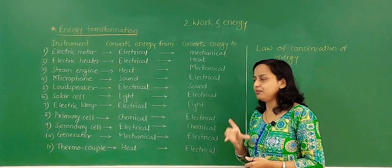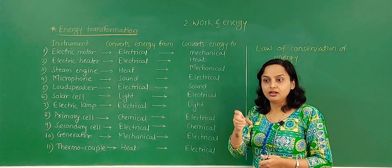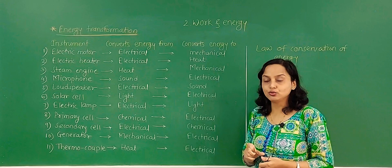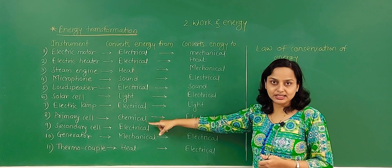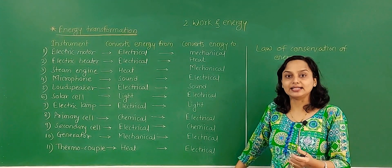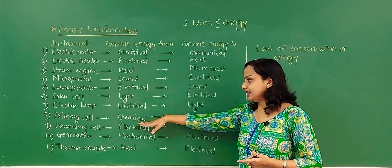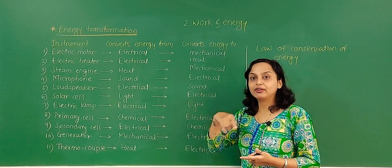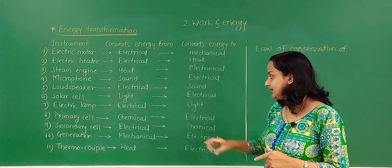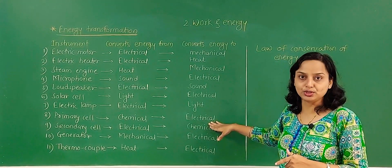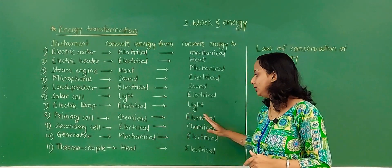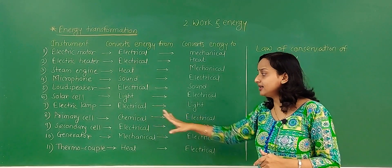The next is primary cell. Primary cells are the normal cells we use — batteries in a torch or radio. Primary cells convert chemical energy into electric energy.